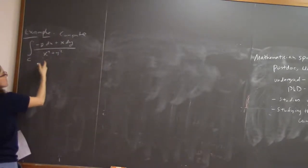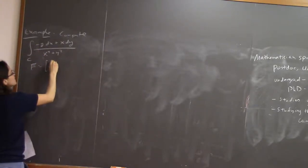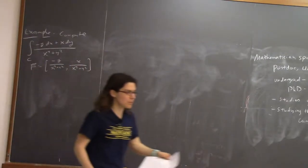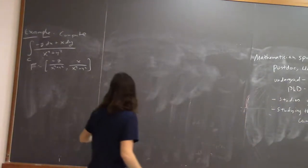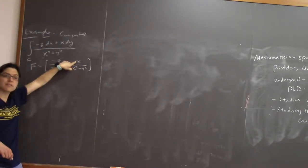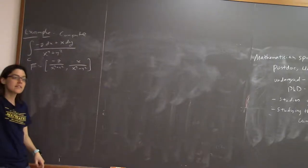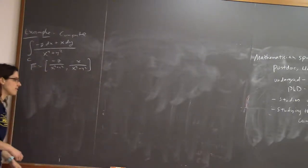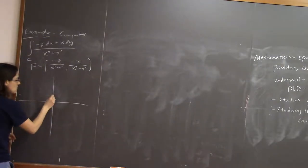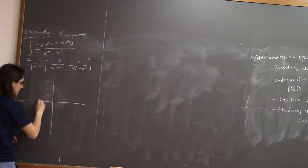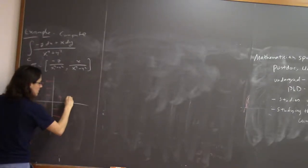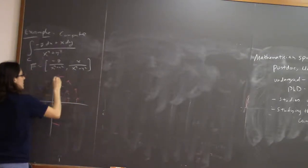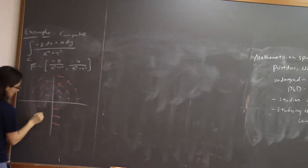Let's draw a picture. This vector field F is negative y over (x squared plus y squared) comma x over (x squared plus y squared). You might notice it's just negative y comma x — one of our favorite vector fields — that's the vector field that just goes around counterclockwise. But in this case we've divided by the length of the vector, so it's the vector field that goes around counterclockwise but all the vectors have length one.